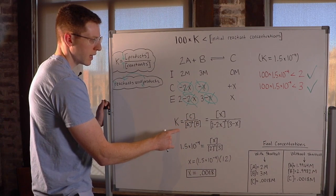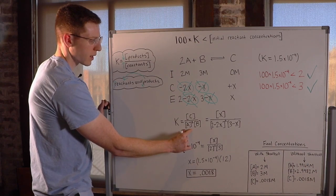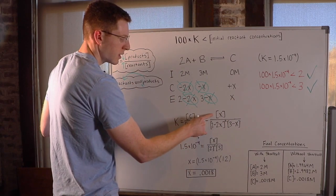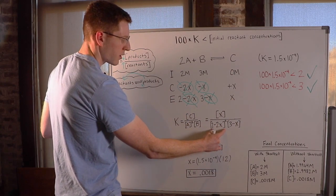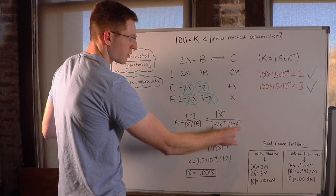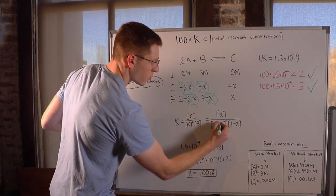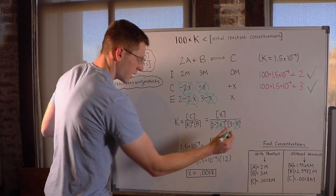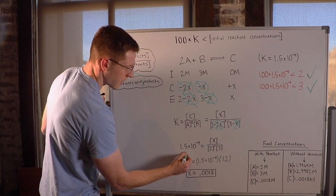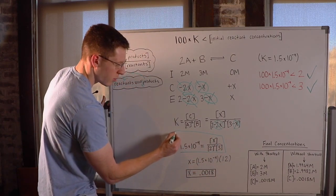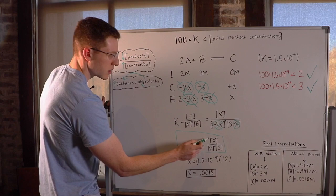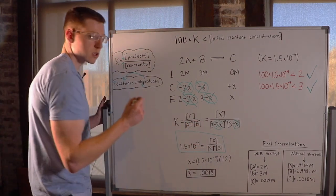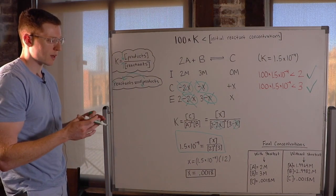You could set up your K, and it would be concentration of C over concentration of A squared times the concentration of B. And you would have concentration of X for your C, 2 minus 2X squared for your A, and 3 minus X for your B. But again, we don't need to worry about this and this. So just forget about them. So I went ahead and rewrote the proper K expression right here. 1.5 times 10 to the negative 4 equals X over 2 squared times 3. See how much that simplifies our expression? Makes it a lot easier to solve algebraically.